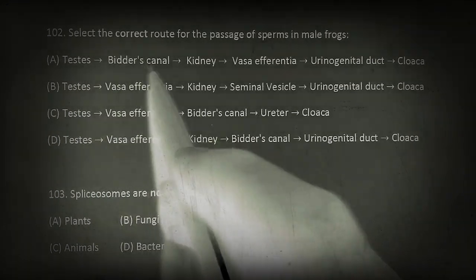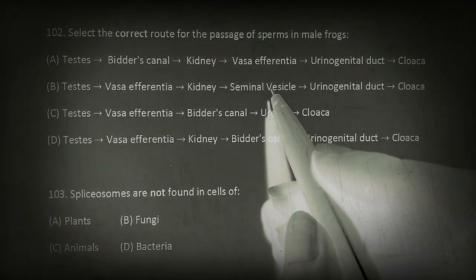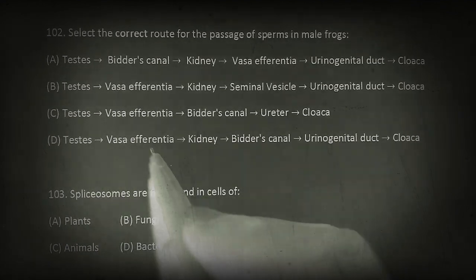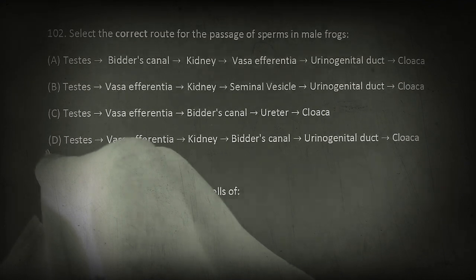According to the options, testis, vasa efferentia, kidney, seminal vesicle, no, Bidder's canal first. Testis, vasa efferentia, Bidder's canal, no. Testis, vasa efferentia, kidney, Bidder's canal, urinogenital duct, cloaca. D is the correct choice.